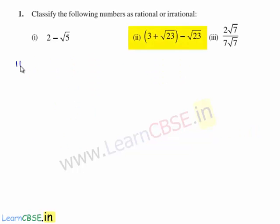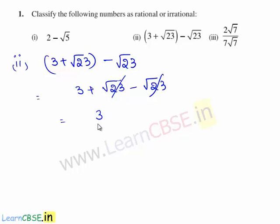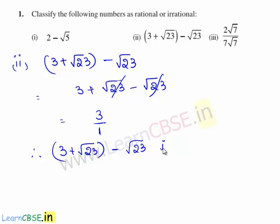Now let us move on to the second bit of the question. The next expression given is 3 plus root 23 minus root 23. This can be written as 3 plus root 23 minus root 23. Here plus root 23 and minus root 23 get cancelled and we are left with 3. Since 3 can be written as 3 by 1, which is in the form p by q where 3 and 1 are integers, therefore 3 plus root 23 minus root 23 is a rational number.